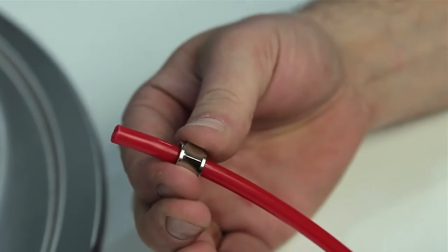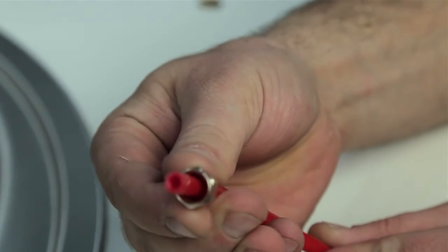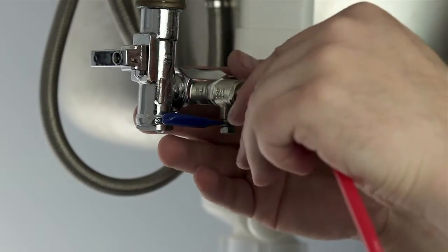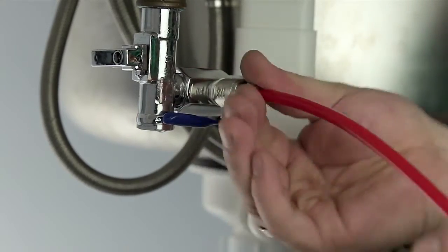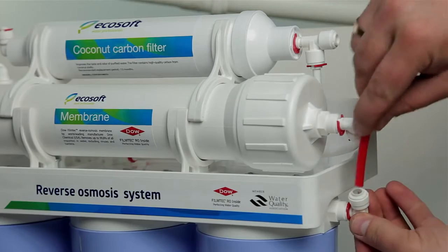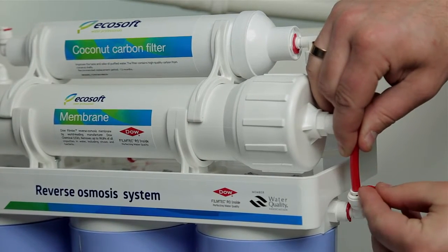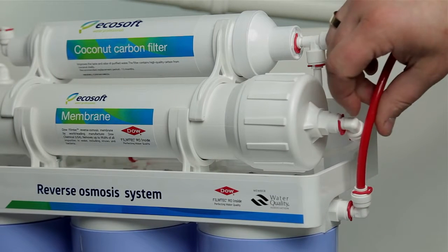Unscrew the compression nut from the feed valve and put it on the red tube. Push the red tube on the end of the feed valve's fitting and screw on the compression nut. Connect the free end of the red tube with the quick connection fitting on the first, rightmost housing in the rack.